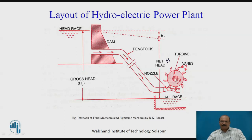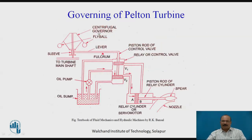The turbine shaft is coupled to the governor. We will study from the shaft output through to the governor. Here we have an oil sump and an oil pump, which pumps oil to the piston rod of the control valve and the relay control valve. Oil is supplied to the relay of the control valve.